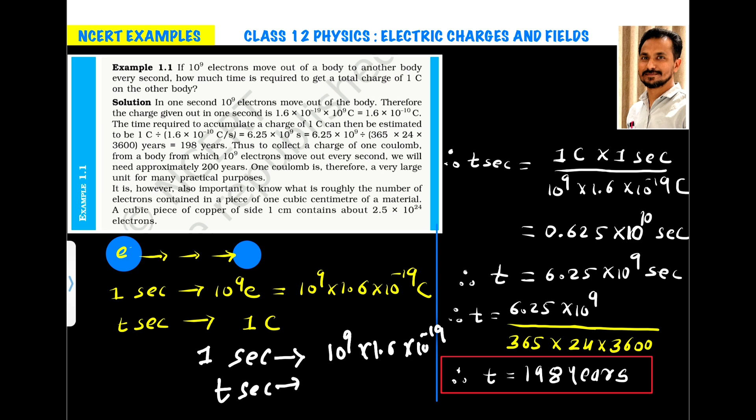So, it takes T seconds to transfer a total of 1 coulomb charge. So, we can solve this question by simple cross multiplication. So, what we will do? We will cross multiply. So, here we will make T second as a subject.